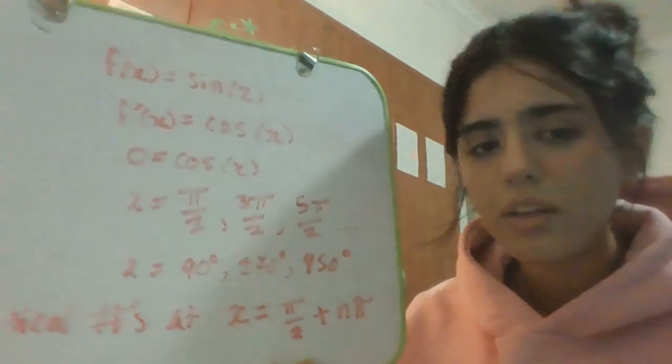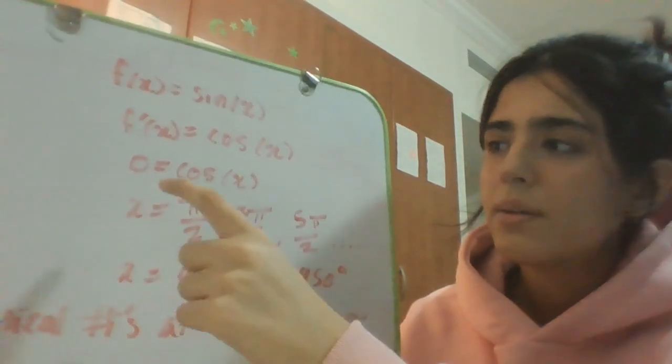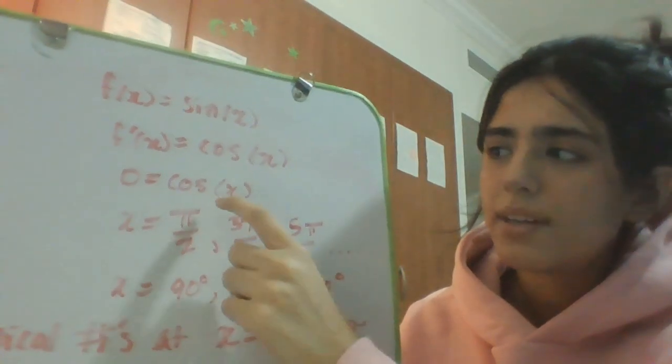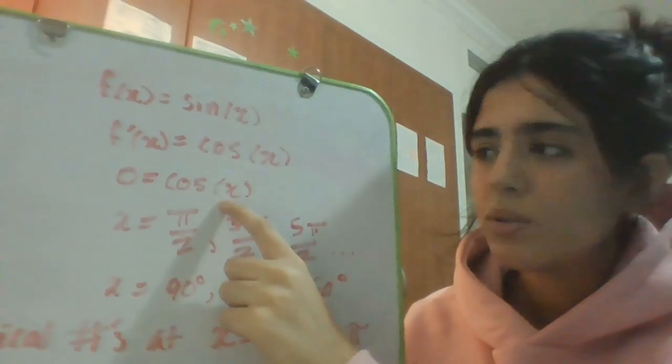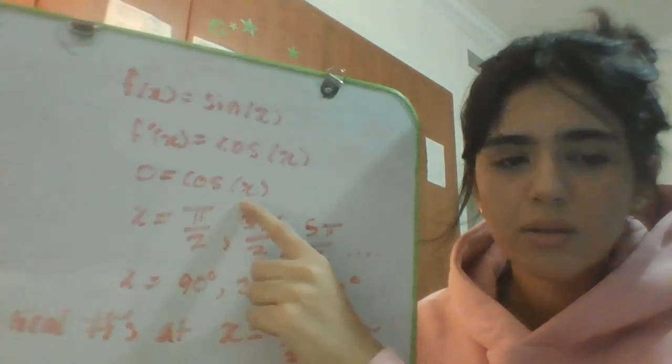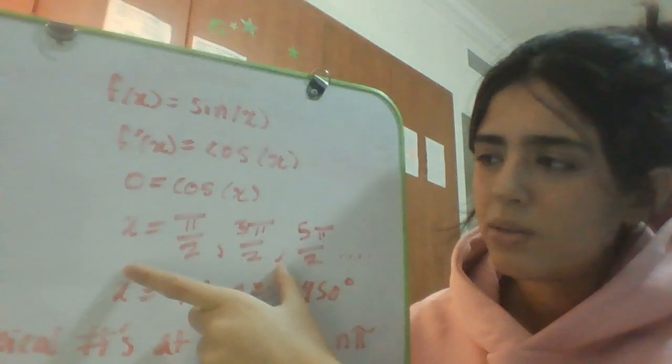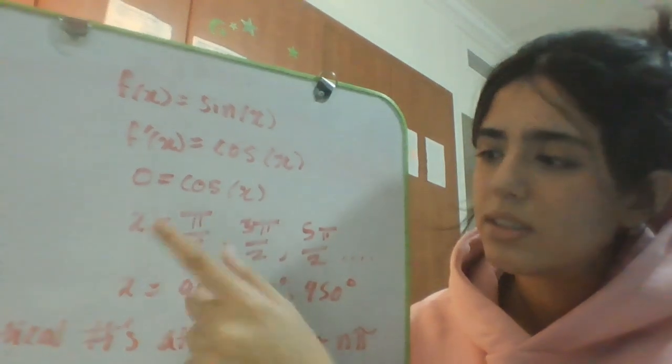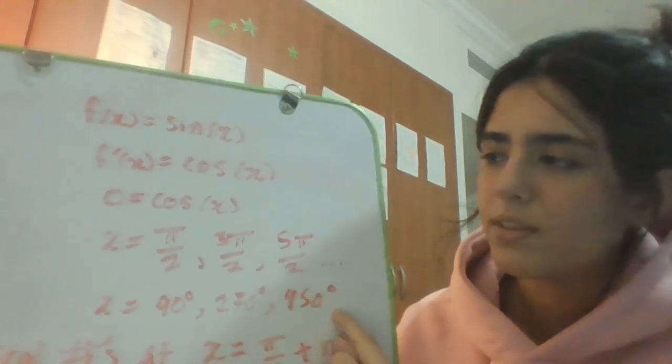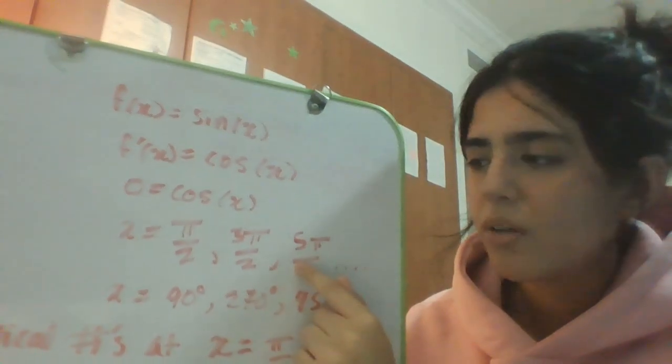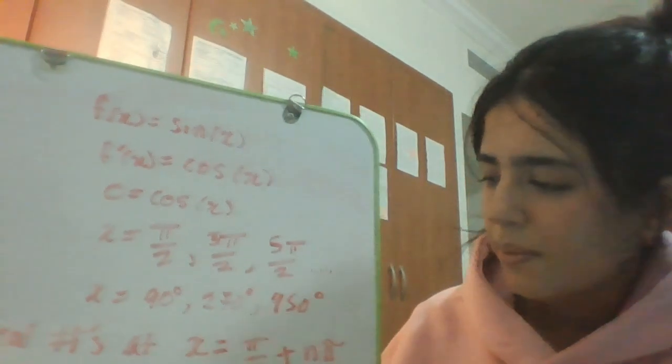Here I wrote it. As I said, we made the derivative equal to zero, so 0 = cos(x). You want to use the x values that will make cos equal to zero. From the unit circle we know that in these values cos will be zero. This is 90 degrees, 270 degrees, 450 degrees, and you're just adding π to each one.